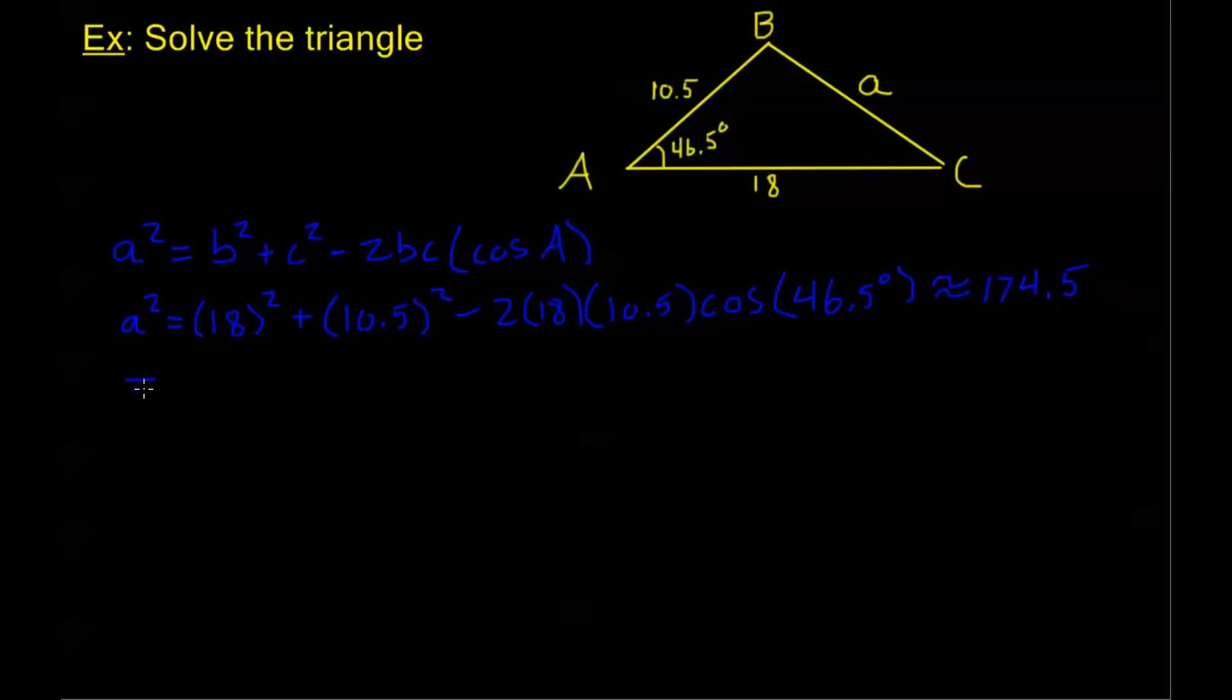So then, since a is positive - it's a side of a triangle - I can take the square root of both sides. I'm going to take the positive square root of the right side. So a equals the square root, positive square root of 174.5, and this in turn is about equal to 13.2.